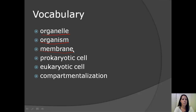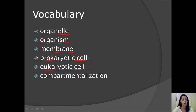Further along in the video, we're going to be talking about the differences between prokaryotic and eukaryotic cells. A prokaryotic cell does not contain membrane-bound organelles. And a eukaryotic cell does contain membrane-bound organelles, such as a nucleus or a mitochondria. And the final word is compartmentalization — to separate into parts.